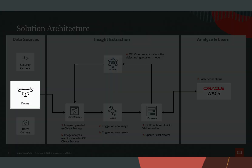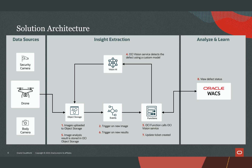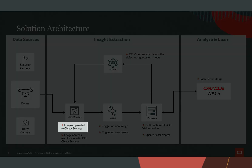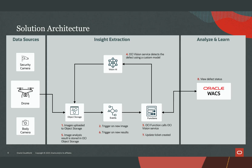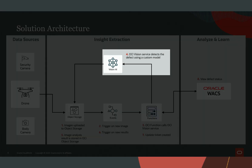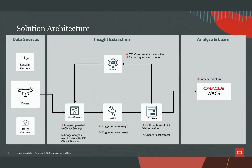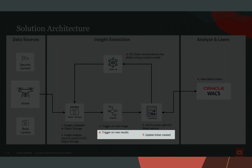So to summarize the process: first we gather data sources, in this case from drones. The data is uploaded to OCI object storage. An event triggers on new images, at which point OCI function calls the OCI Vision service. OCI Vision detects the defect using a custom model and returns the results to object storage.